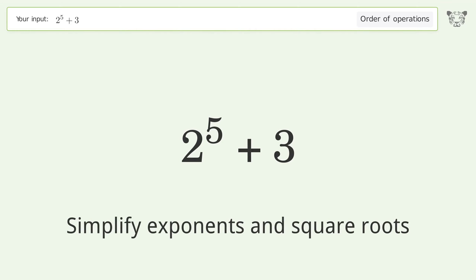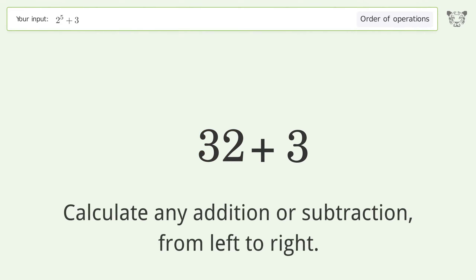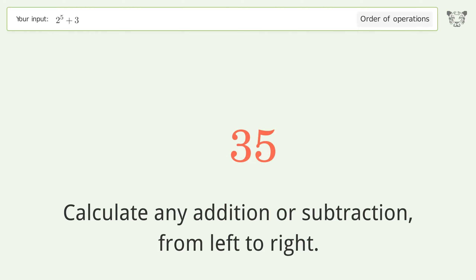First, simplify exponents and square roots: 2 to the power of 5 equals 32. Then calculate any addition or subtraction from left to right: 32 plus 3 equals 35.